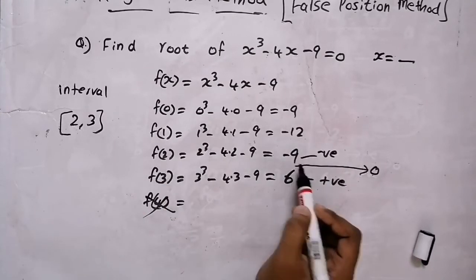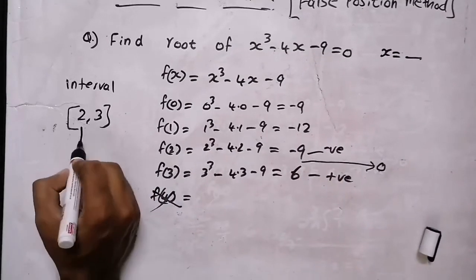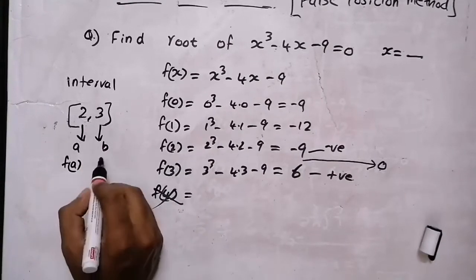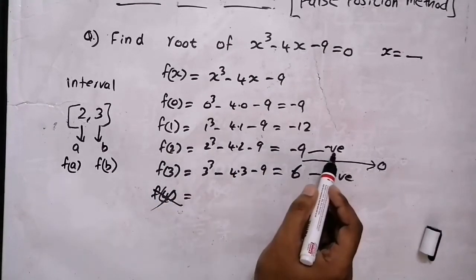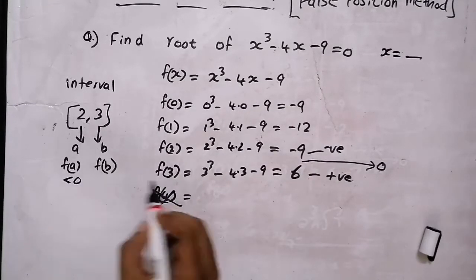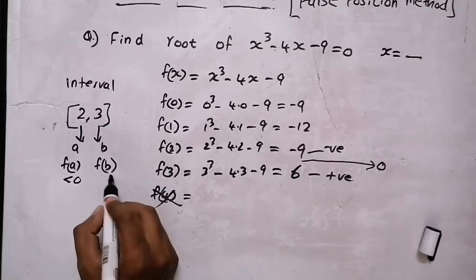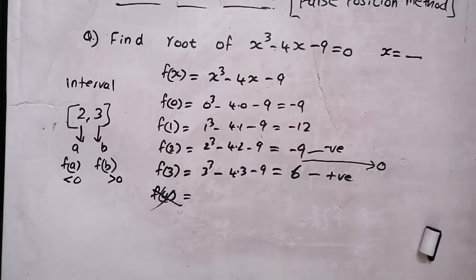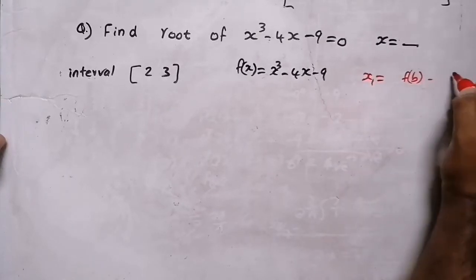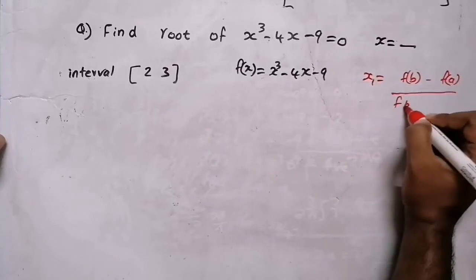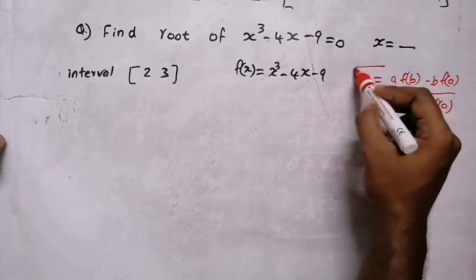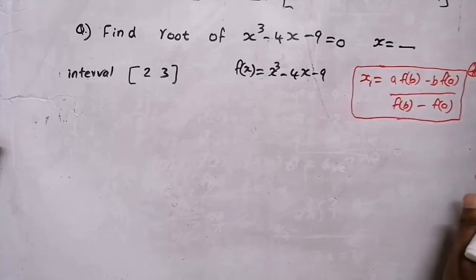We have the interval [2, 3], so we write a = 2 and b = 3. f(a) = −9, which is less than 0, and f(b) = 6, which is greater than 0. The Regula Falsi formula is: x₁ = [a·f(b) − b·f(a)] / [f(b) − f(a)].